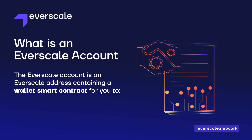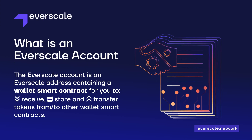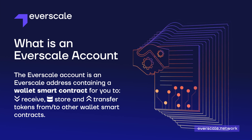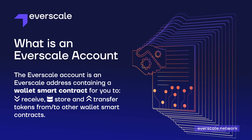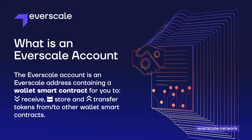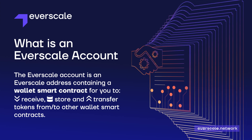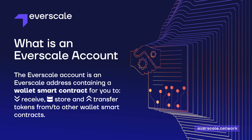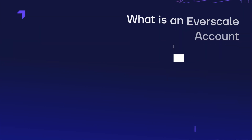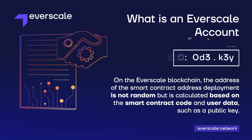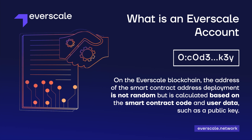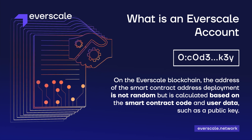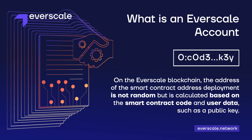An Everscale account is an Everscale address containing a wallet smart contract. This smart contract can receive coins from other wallet smart contracts, store and transfer them. You can transfer coins and tokens to any address, but if the smart contract is not deployed correctly, your coins or tokens might be lost. On the Everscale blockchain, the address of the smart contract deployment is not random, but is calculated based on the smart contract code and user data, such as public key.